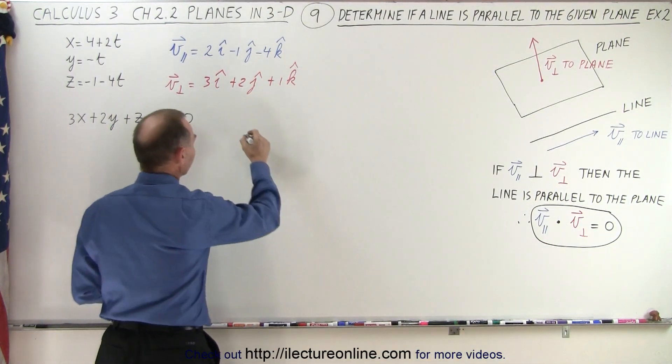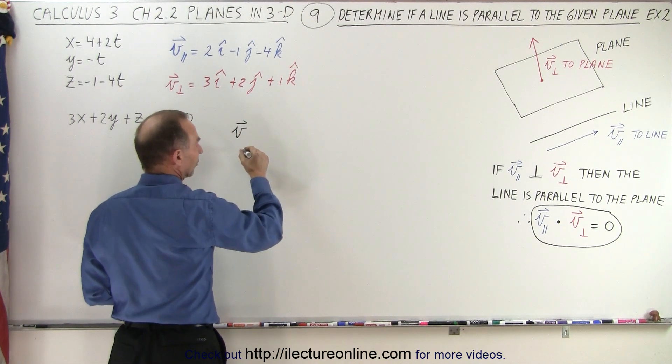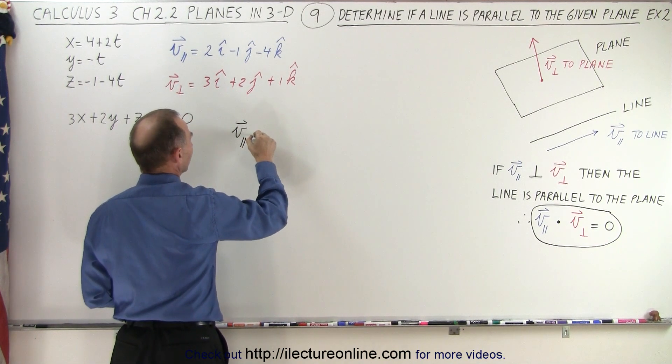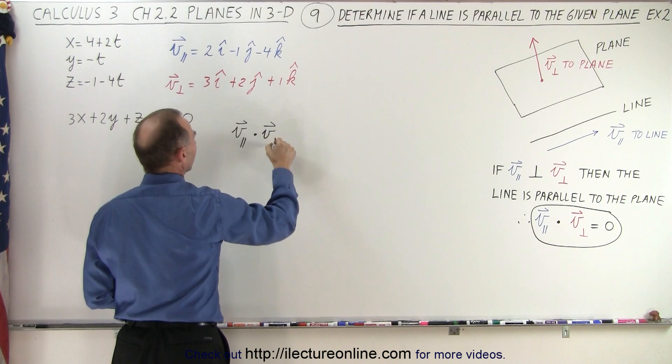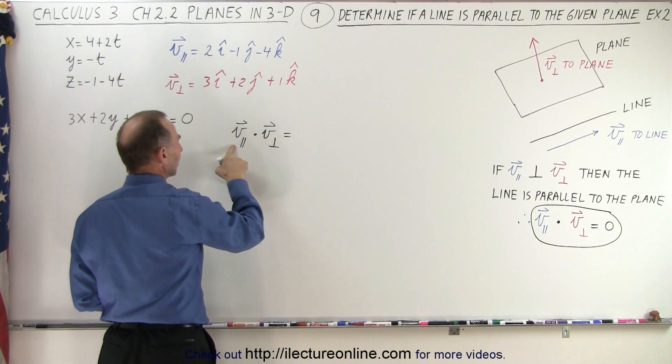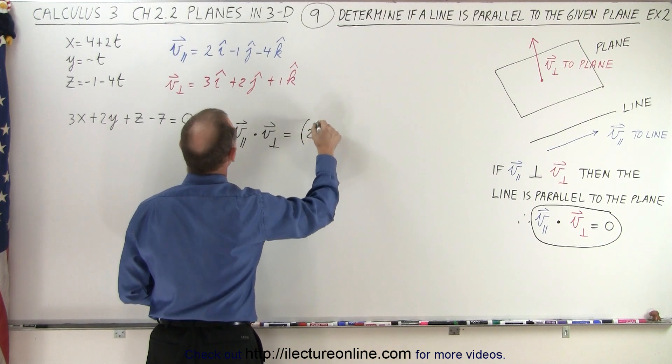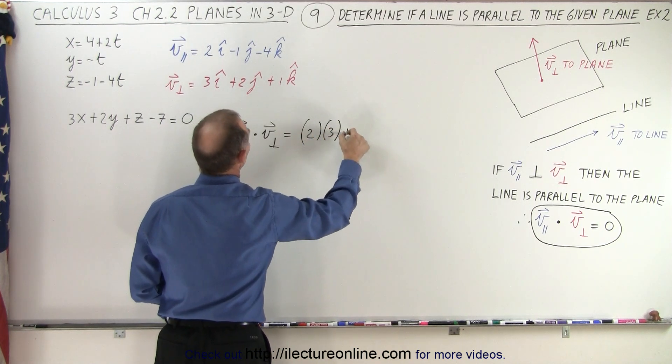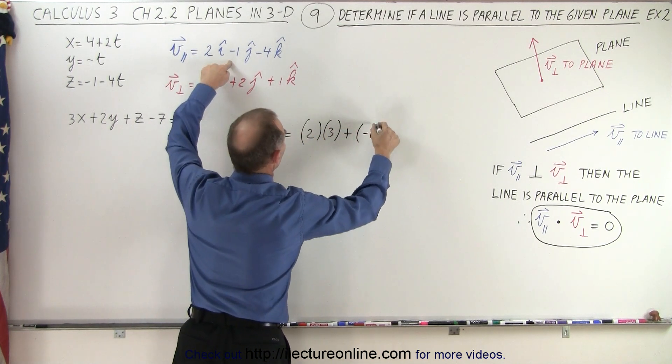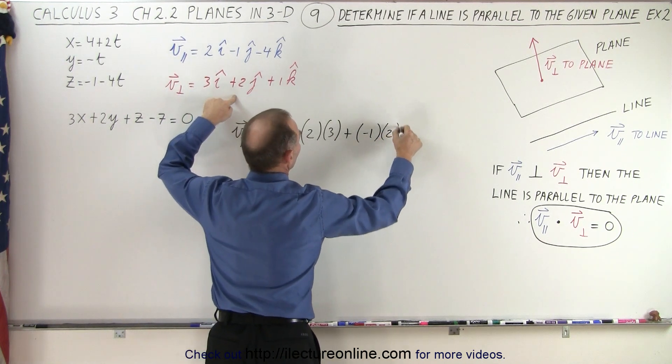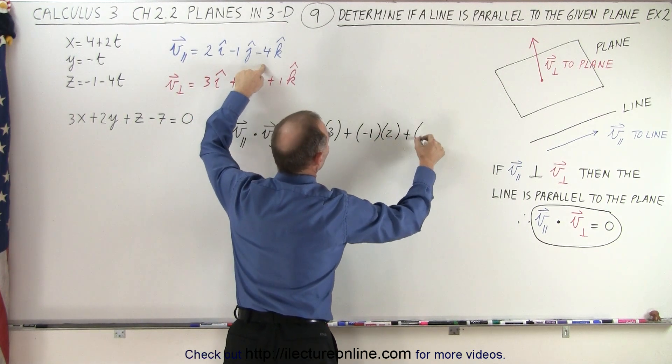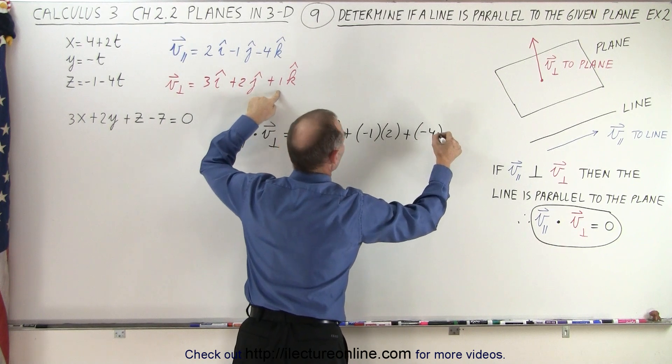Okay, now for the dot product. So the dot product of the parallel vector with the perpendicular vector, again that's parallel to the line and perpendicular to the plane, is going to be 2 multiplied times 3 plus negative 1 multiplied times 2 plus negative 4 multiplied times positive 1.